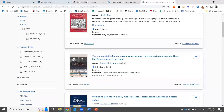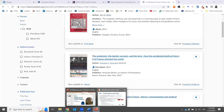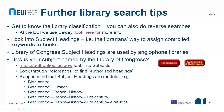Subject headings are modular. They start from the main subject — for example, birth control — then you add the country France, then history, then if you want to be more specific, 20th century or 16th century, whatever. You can have very long or very short subject headings depending on your needs. It's a very good way to find books, especially in big catalogues like WorldCat.